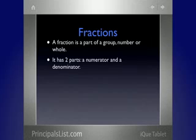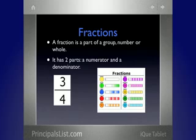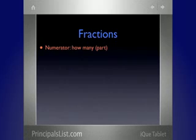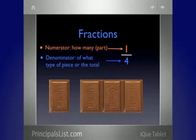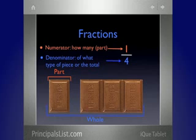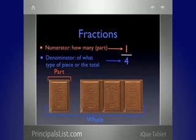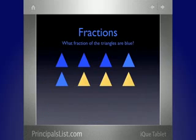Fractions are those parts of a group or a whole number. It has two parts. So it's like part of the whole thing — that's right — if I broke it up. The numerator is how many — that's the top number. The numerator is one, and the denominator is of what type of piece or the total. Here we have chocolate — this is for me, Mr. F. If I get it right, do I get the chocolate? The part on the left is one — that's your numerator. And the four pieces is your whole — that's the bottom number, your denominator. So I want you to think about what fraction of these triangles are blue while I talk to the students.